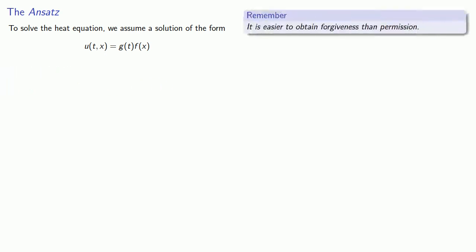Remember, we're allowed to do this because it is easier to obtain forgiveness than permission. If this actually leads to a solution to the heat equation, the existence of that solution justifies this assumption.